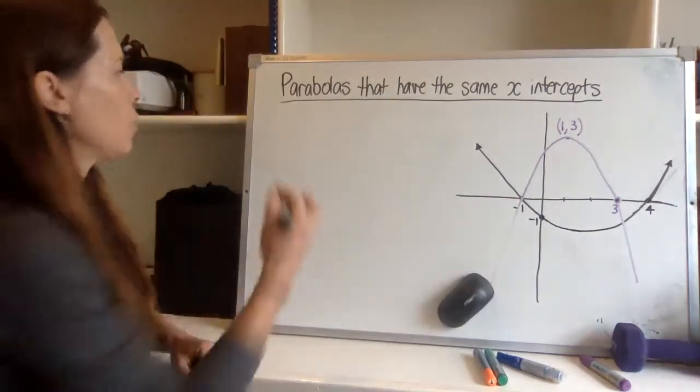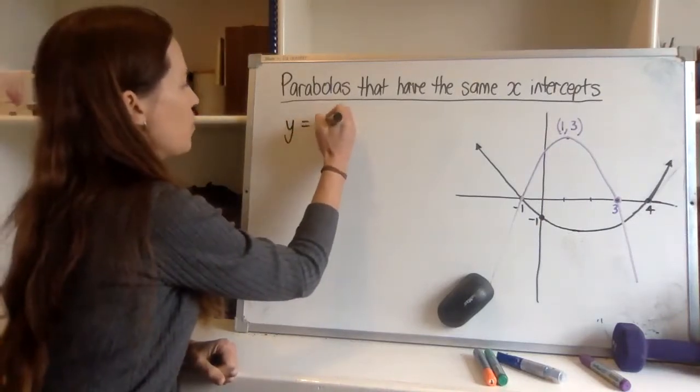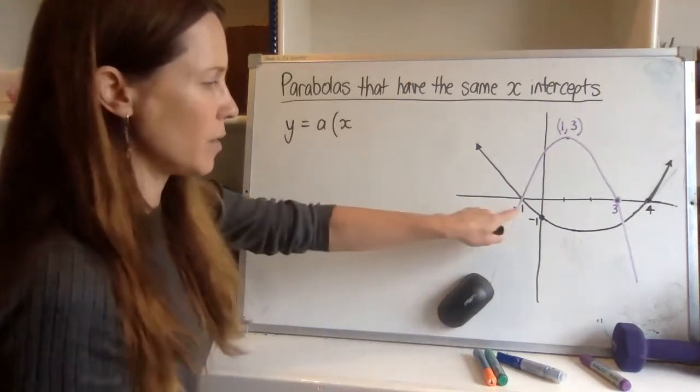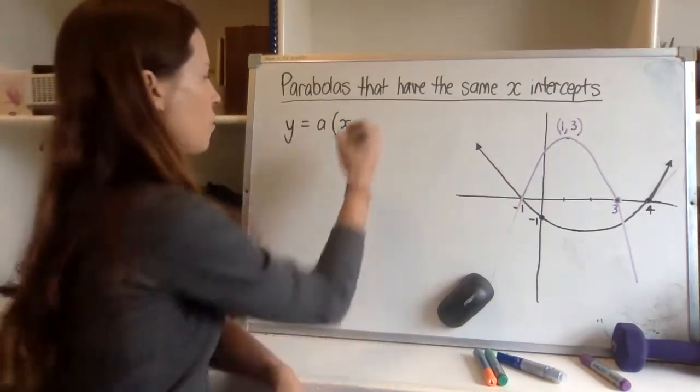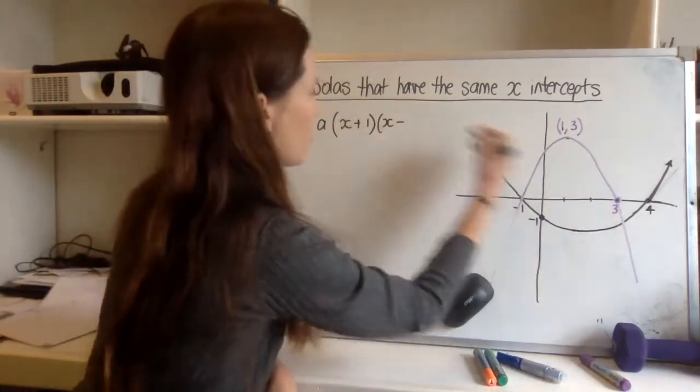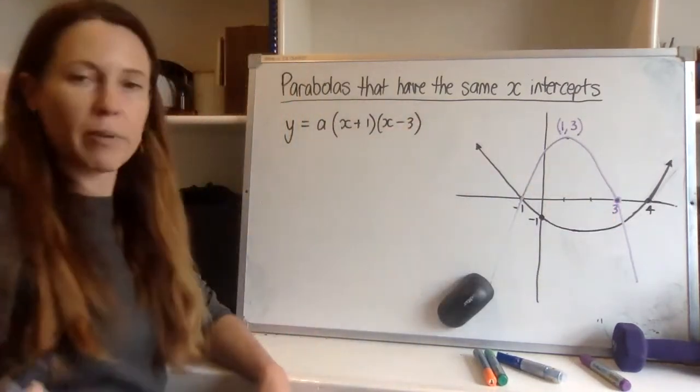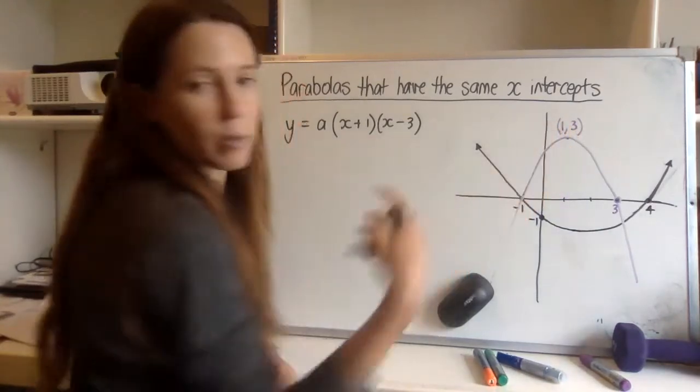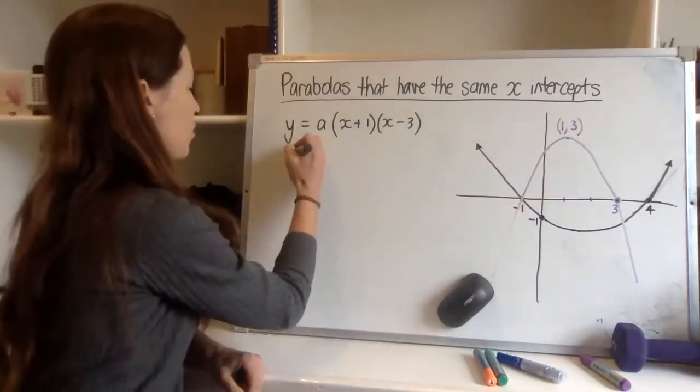Now the purple one, well the basic form is we put the y equals a and then we say it's x minus, again we've got x minus negative one, that's x plus one, and x minus three. All right, now we need to use a clue. Our clue is that when x equals one, y equals three, because that's the only other known point that we've got there.